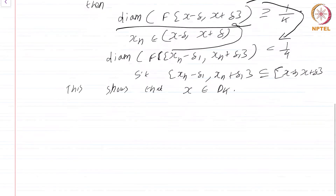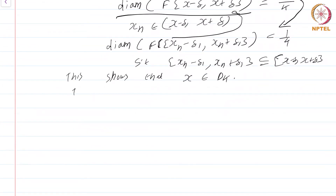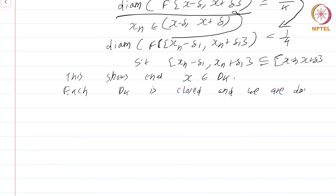This shows that x must also be in D_k: the oscillation at x cannot be less than 1/k, because if it were, then points x_n very close to x would also have oscillation less than 1/k, which is not allowed. So each D_k is closed, and we are done. That was a rather easy proof — all we had to observe was that oscillations behave nicely with respect to taking limits.